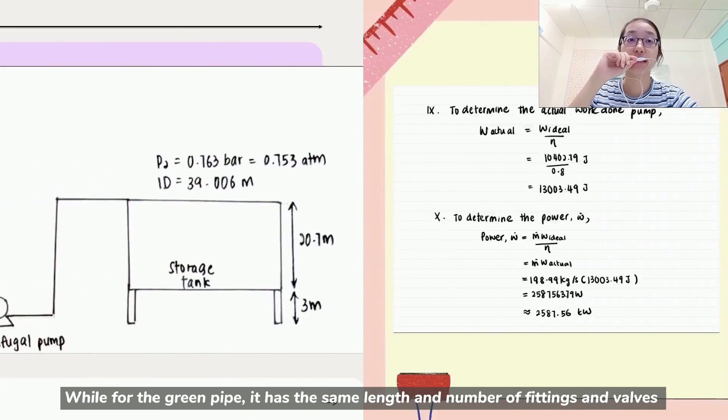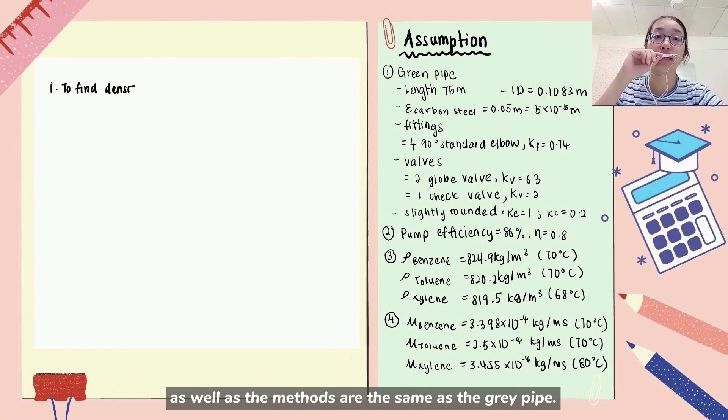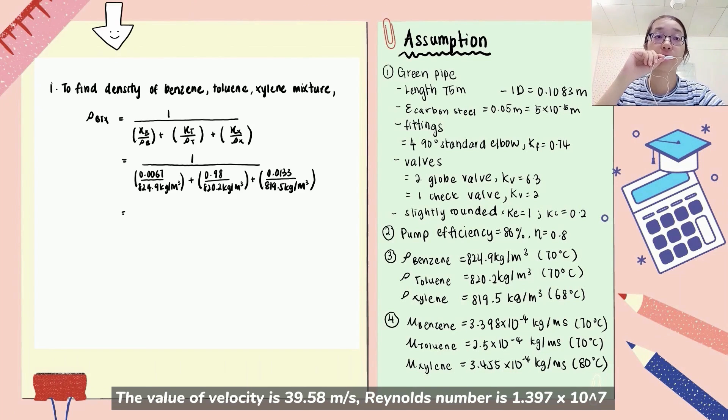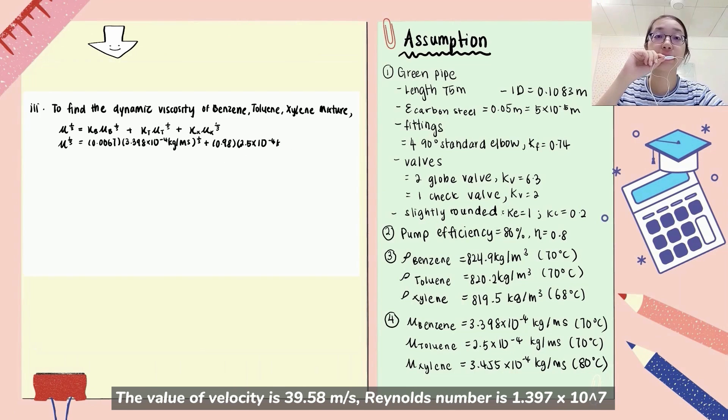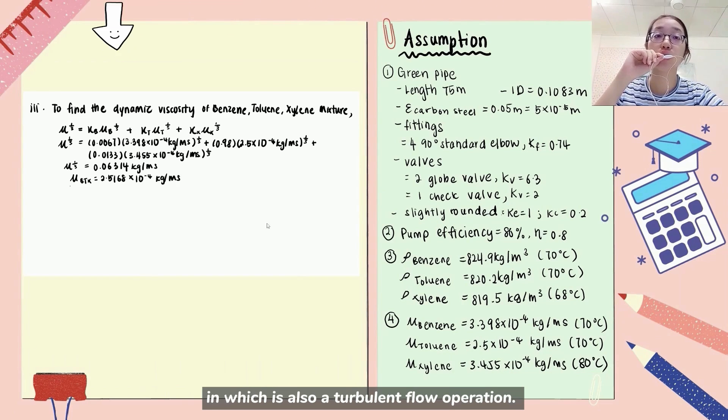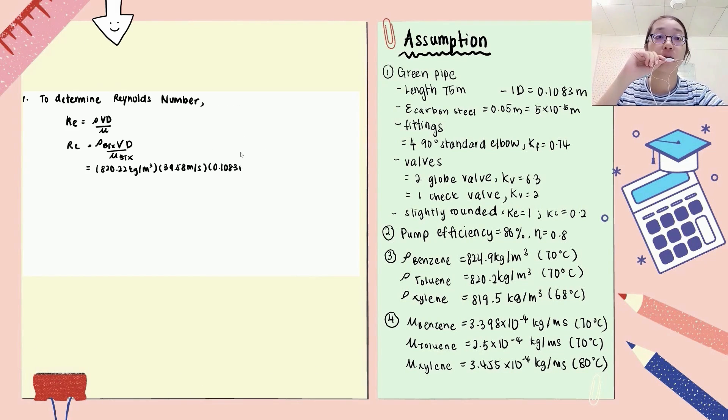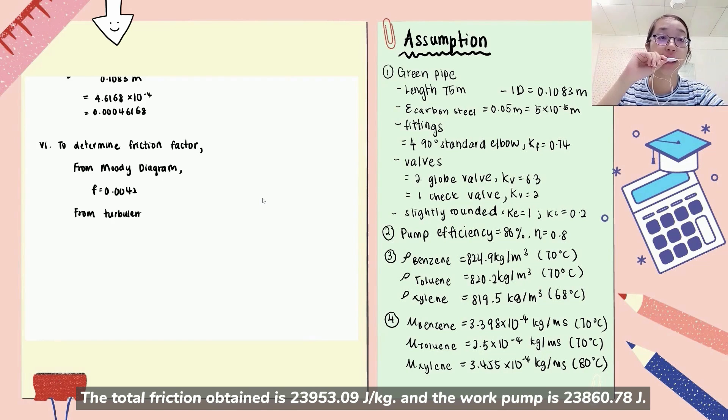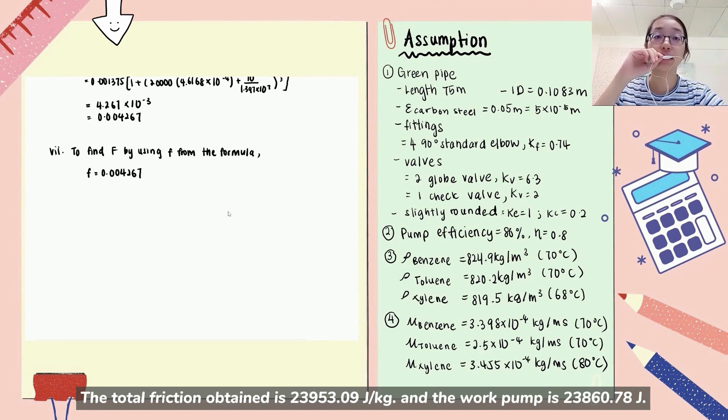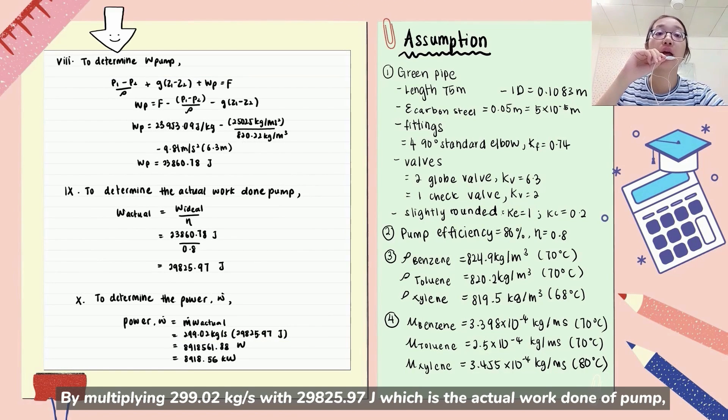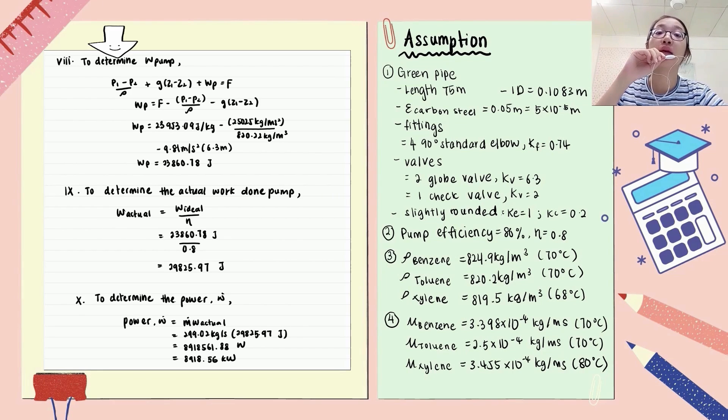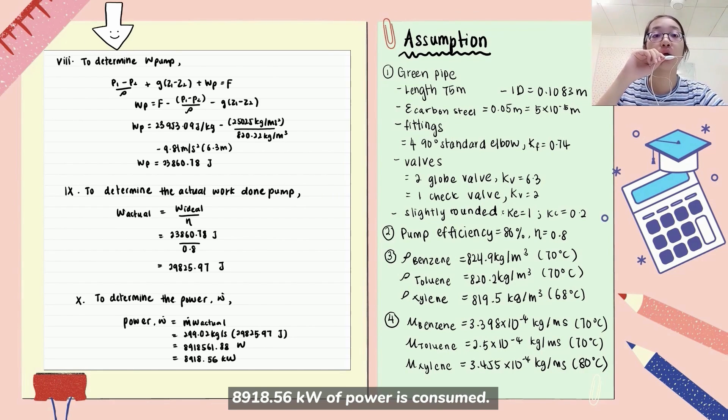While for the green pipe, it has the same length and number of fittings and valves as well as the methods are the same as the grey pipe. The value of velocity is 39.58 per second. Reynolds number is 1.397 times 10 to the power of 7 which is also a turbulent flow operation. The total friction is 23953.09 Joules per kg and the work of pump is 23860.7 Joules. By multiplying 299.02 kg per second with 29825.97 Joules which is the actual work of pump, 8918.56 kW of power is consumed.